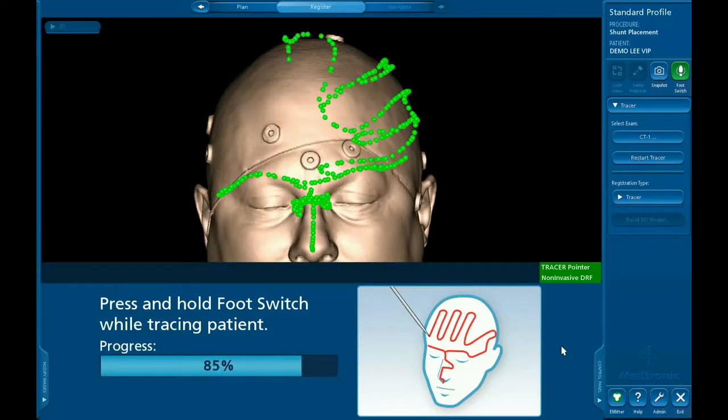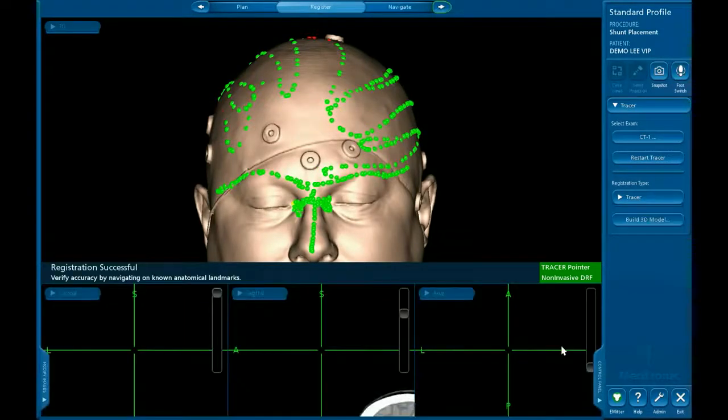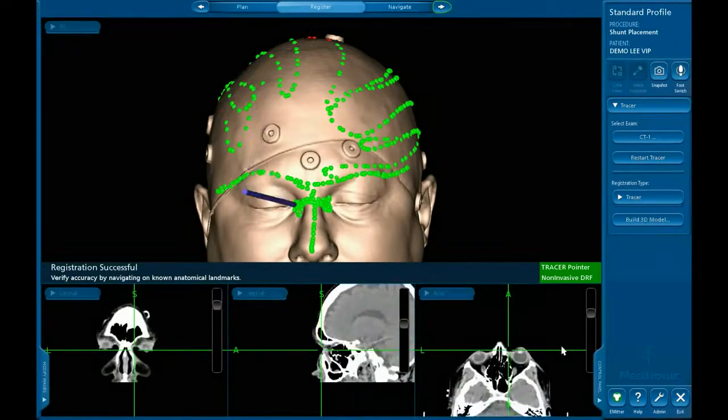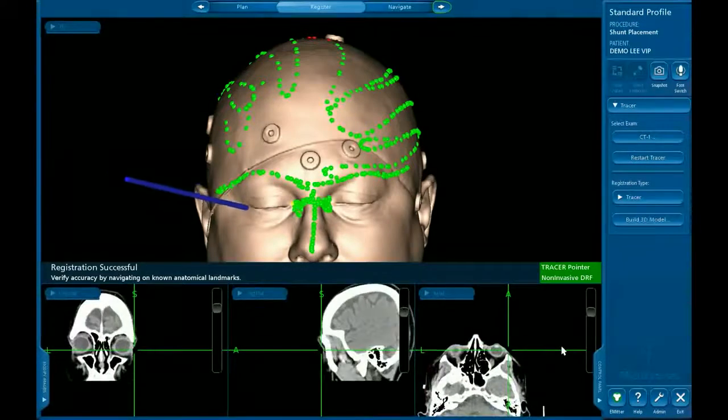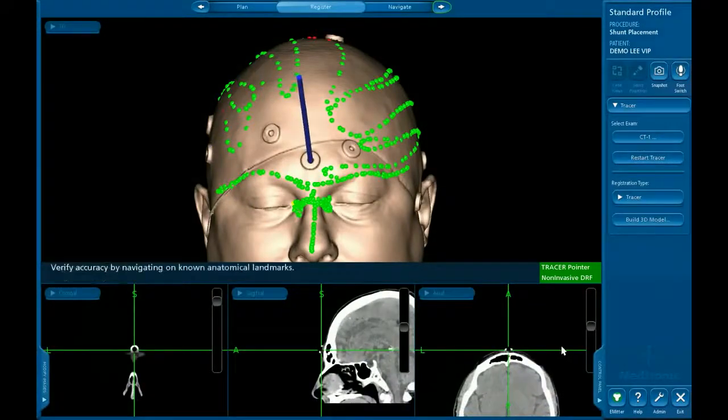Pushing too hard can displace a fiducial or lead to a tracer pattern that doesn't map to the scalp surface in the scan as closely as possible. Using a light touch will ensure the best patient registration possible. A good registration technique is crucial to ensuring the best possible accuracy.